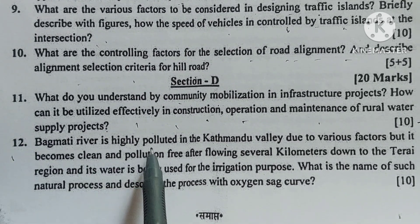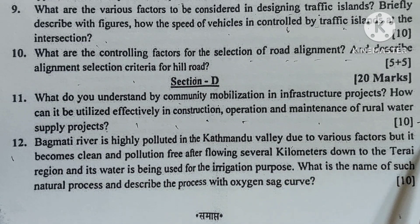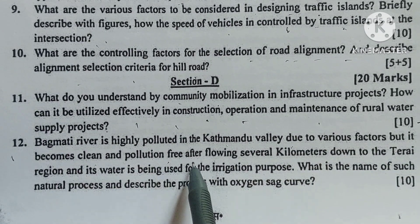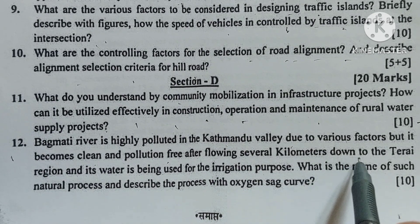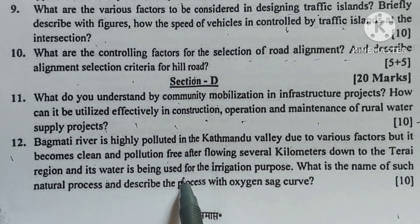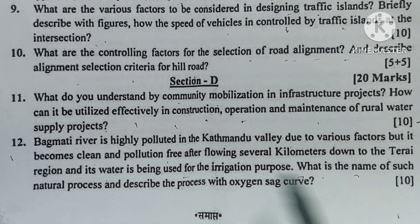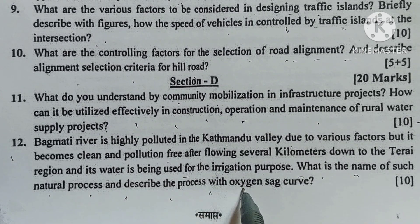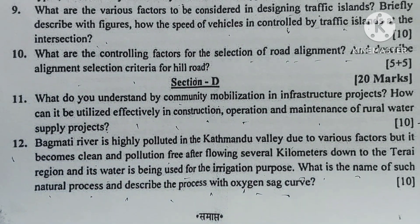Question 12: Bagmati river is highly polluted in Kathmandu valley due to various factors, but it becomes clean and pollution-free after flowing several kilometers down to the Tarai region, and its water is being used for irrigation purposes. What is the name of such a natural process? Describe the process with an oxygen sag curve diagram.